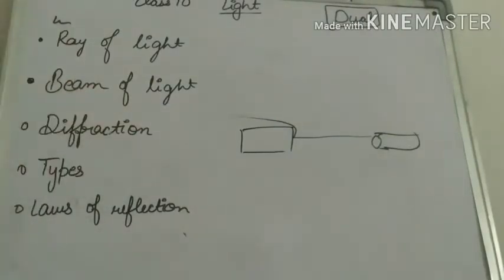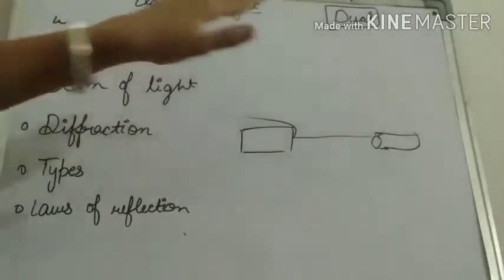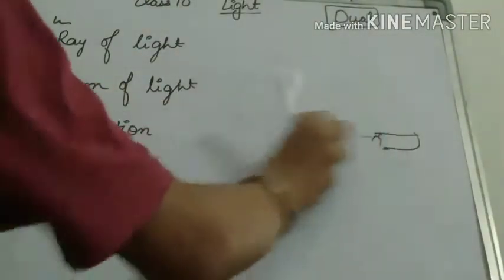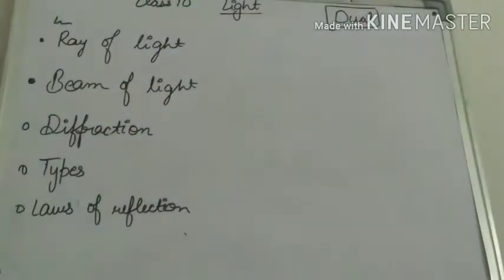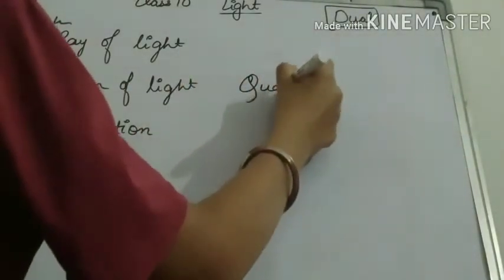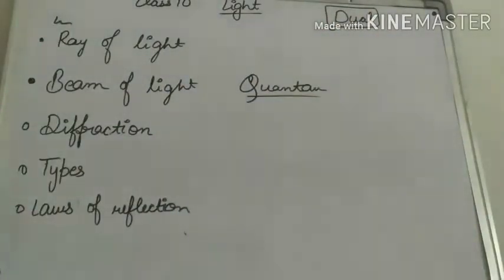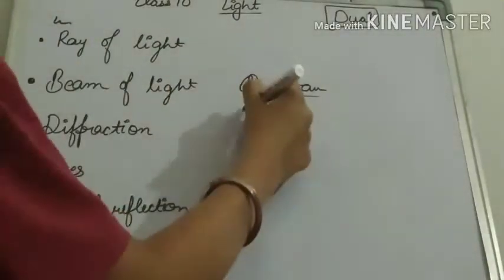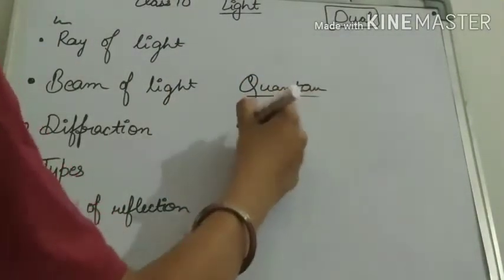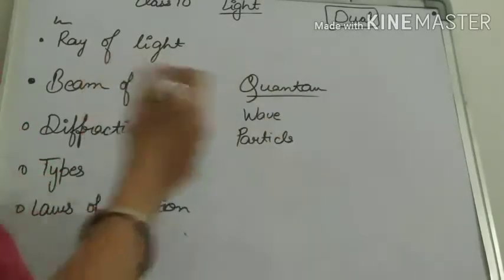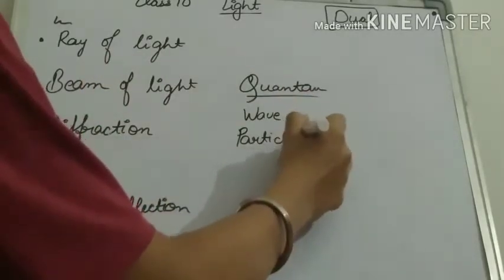Now let's see what dual means. Dual means two. Dual means quantum theory which we have studied. This is the basis of dual nature of light. Why dual? Because it has wave nature and particle nature. Particles also travel and wave nature also travels.